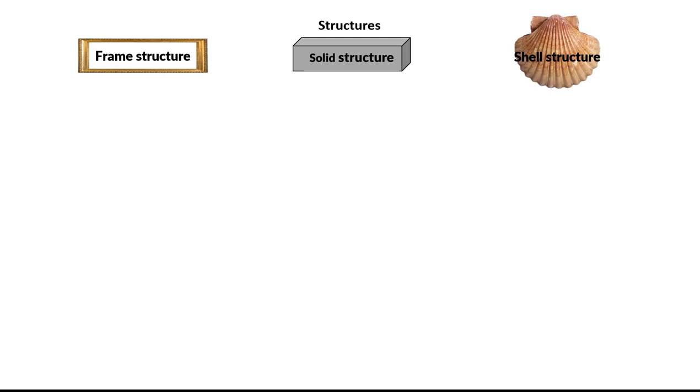A structure is basically any material that can support a load. And there are so many things that can be called a structure that it will help to understand them better using these three classifications: frame structures, solid structures, and shell structures.